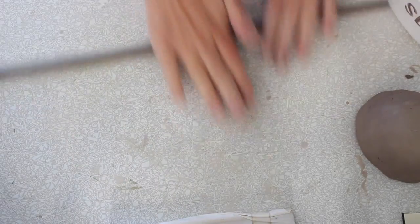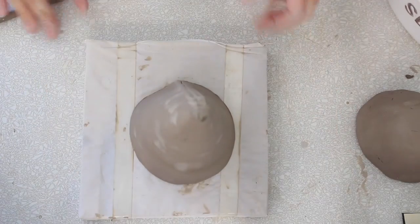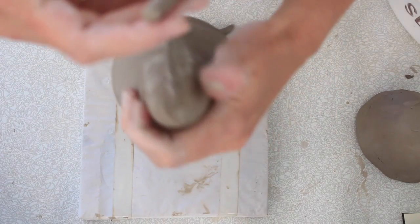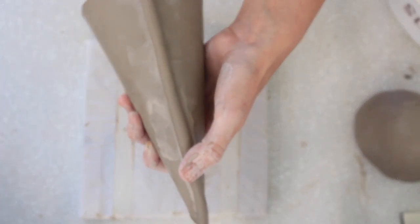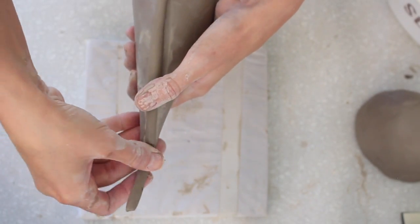And you want this coil to be about the thickness of a pencil. We don't want this really thick, otherwise that's a lot we've got to blend in. So when it's about the thickness of a pencil, you want to pull it up to your cone. And then just kind of tear off the ends.